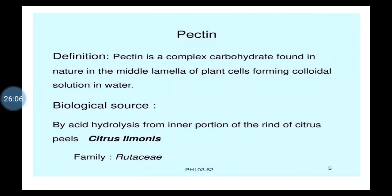Next is pectin. Pectin is a carbohydrate material — chemically it is a carbohydrate. It is a complex carbohydrate found in nature in the middle lamella of plant cells, forming a colloidal solution in water. Biological source: pectin is obtained by acid hydrolysis from the inner portion of the rind of citrus peels.